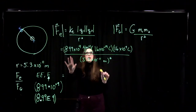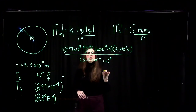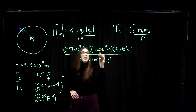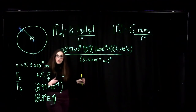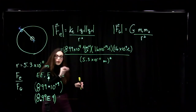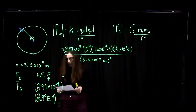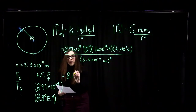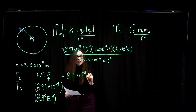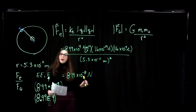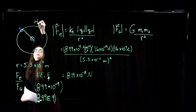Performing the calculation, the Coulombs squared on the bottom cancels with the Coulombs in the numerator, and meters squared cancels as well, leaving units of newtons. The electric force between the proton and electron of the hydrogen atom is 8.19 times 10 to the minus 8 newtons.